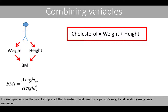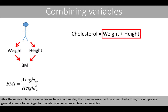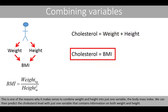For example, let's say we like to predict the cholesterol level based on a person's weight and height using linear regression. However, remember that it could be problematic in linear regression if there is too strong a correlation between explanatory variables, which is called multicollinearity. Also, the more explanatory variables we have in our model, the more measurements we need, so the sample size generally needs to be bigger.